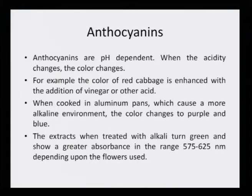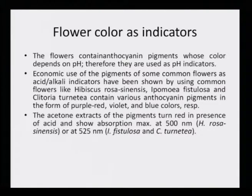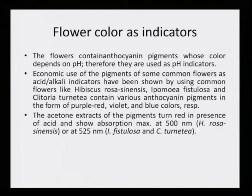These were indications that anthocyanins are really pH dependent, and any alteration in the acidity or basicity of the solution will make a change in the extract. The extracts when treated with alkali turn green and show greater absorbance in the range of 575 to 625 nanometers depending upon the flowers used in a UV-visible spectrophotometer. Flowers containing anthocyanin pigments whose color depends on pH can therefore be used as pH indicators. Economic use of the pigment of common flowers as acid-alkali indicators has been shown using hibiscus rosa sinensis, ipomea, fistula, and clitoria ternatea — all of which contain anthocyanin.